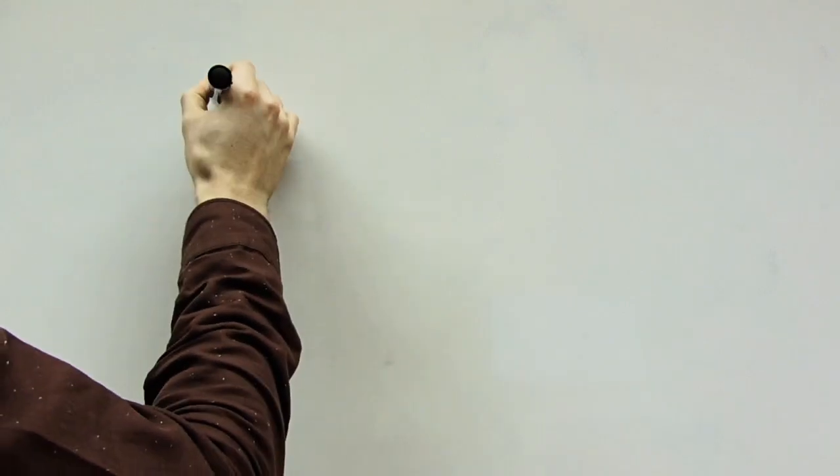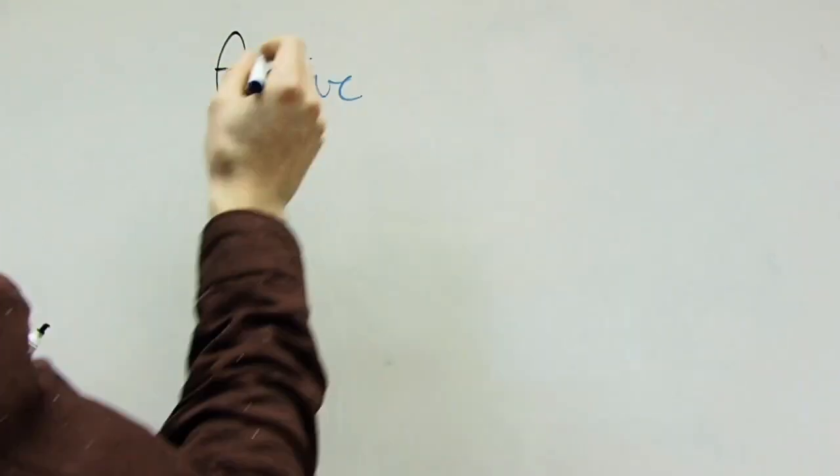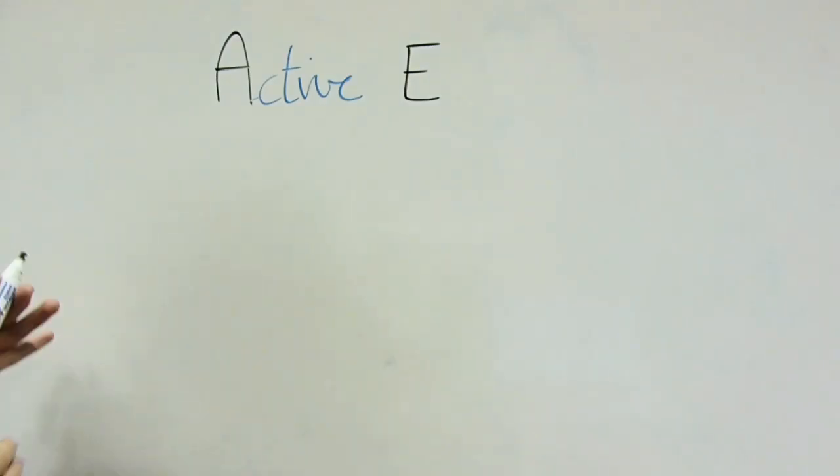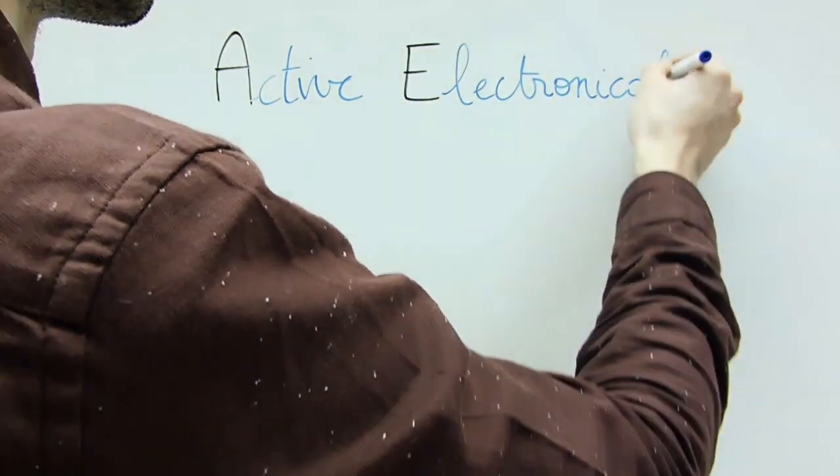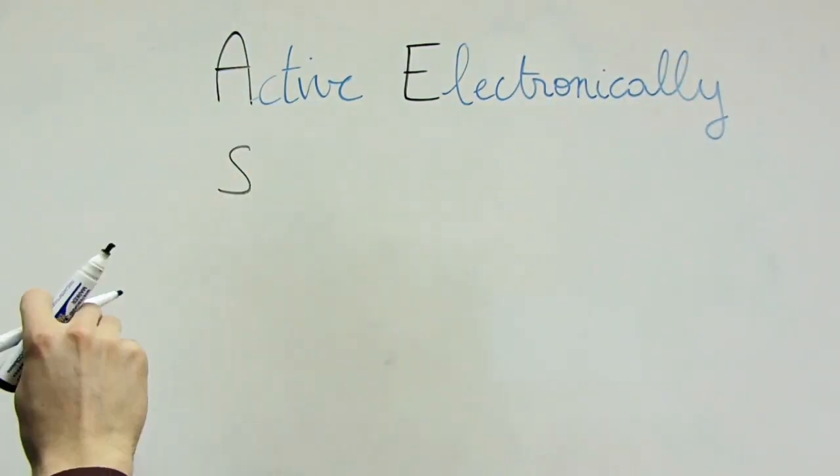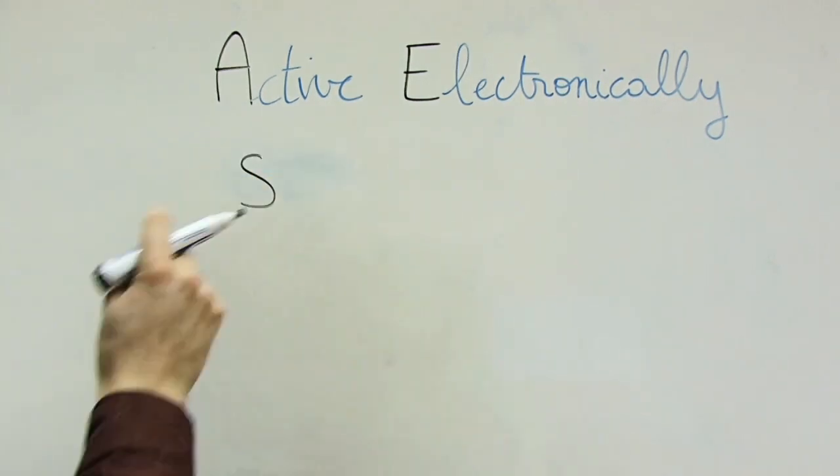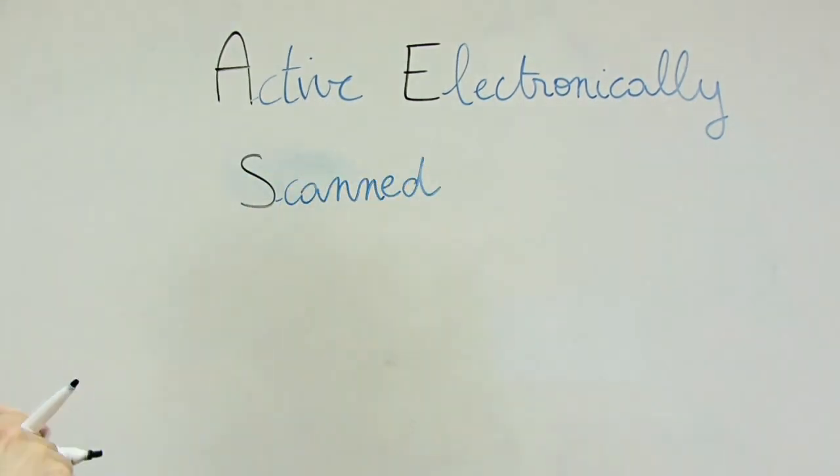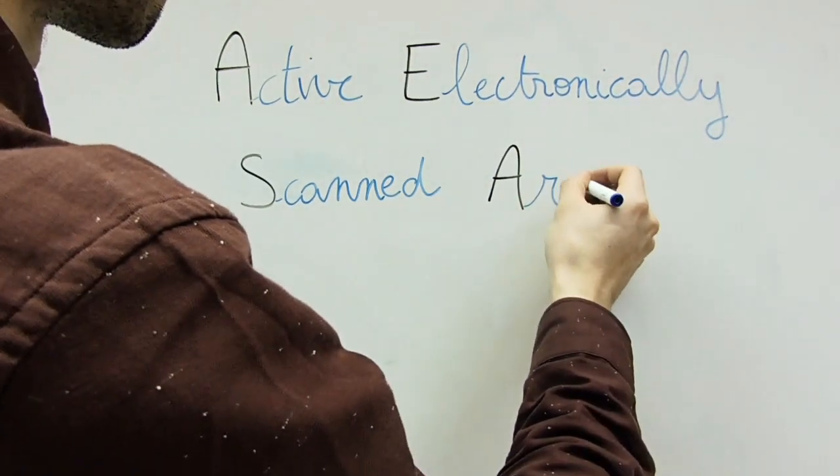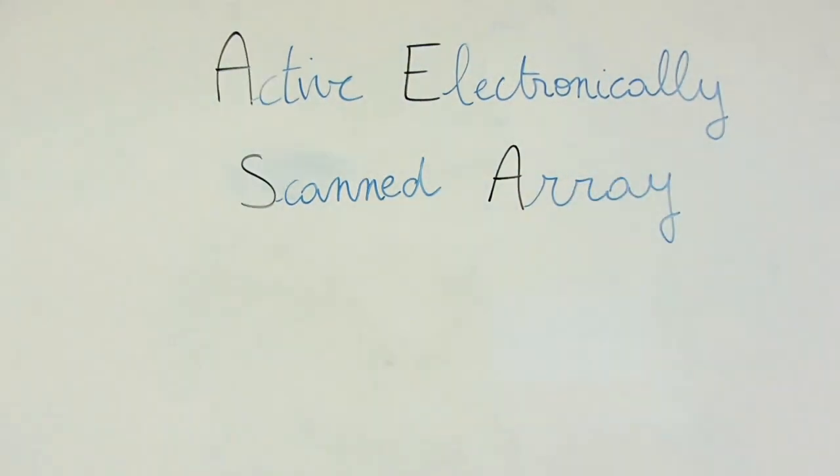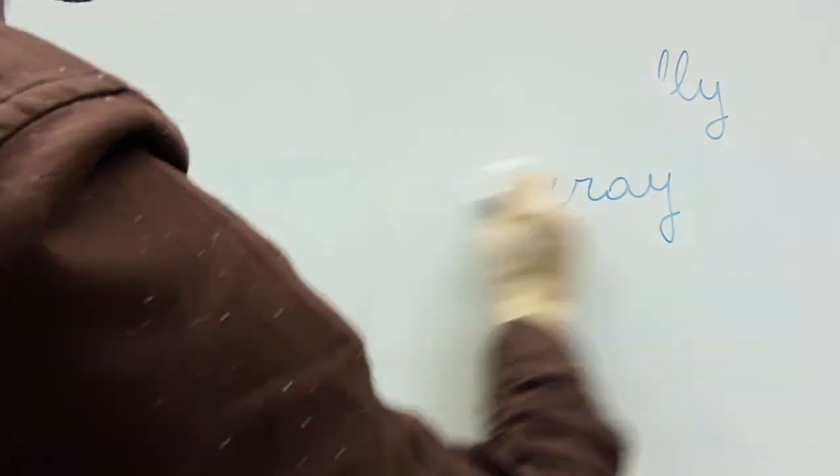The AESA is a more advanced, sophisticated, second generation of the original PESA phased array technology. It stands for Active Electronically Scanned Array. Its development has been made possible thanks to the reduction in size of receiver and transmitter elements.